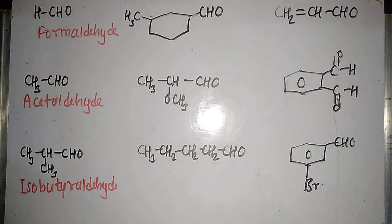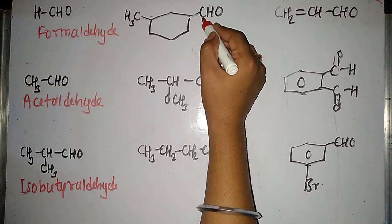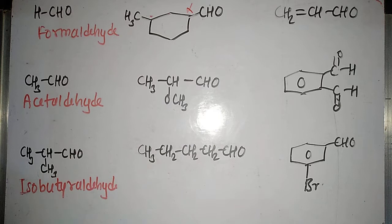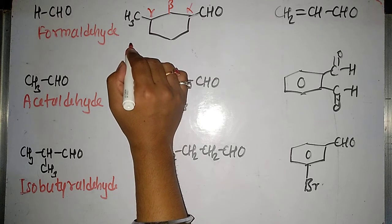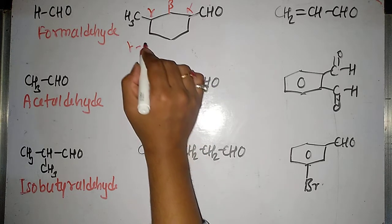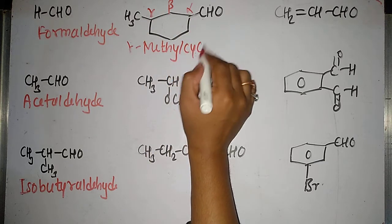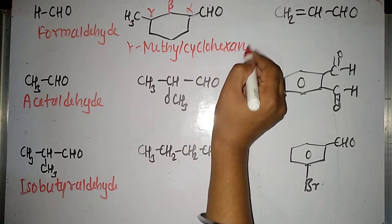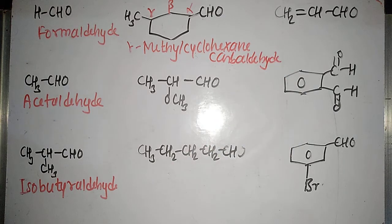Always remember: whenever we have an aldehyde group attached to a ring, the carbon atom of the aldehyde group cannot be counted in the ring, so we call it separately as a carbaldehyde. The carbon next to the carbonyl is called alpha, the next is beta, and very next is gamma. Here at the gamma position we have a methyl group, so I will call it gamma-methyl. The ring is cyclohexane, so the name is gamma-methylcyclohexane carbaldehyde.